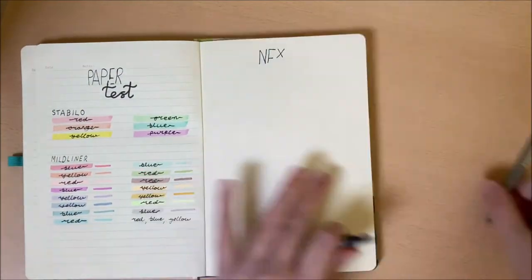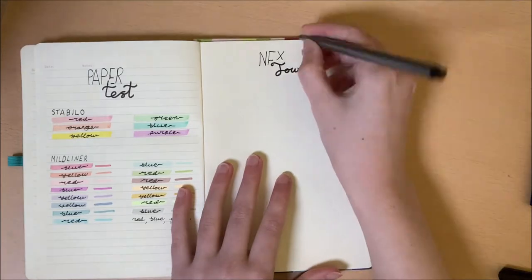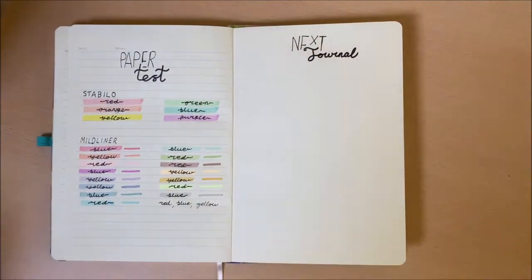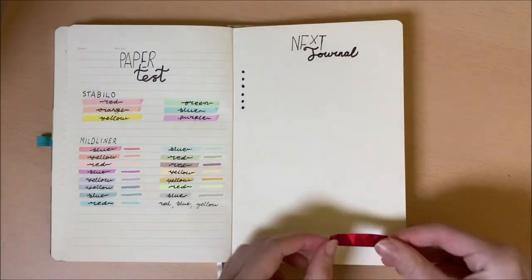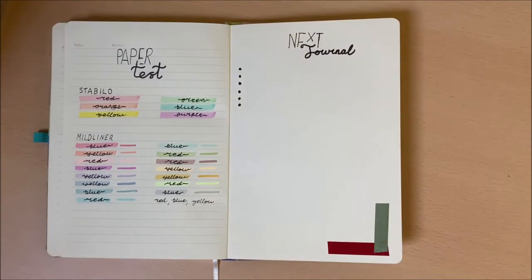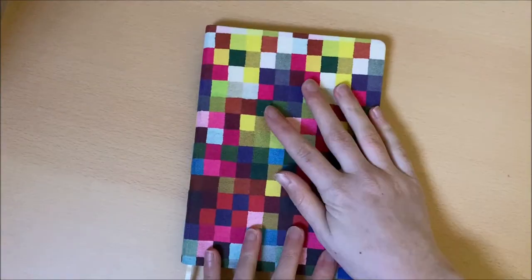And finally the last thing I always include at the back of a journal is a place for ideas for my next journal. This is really helpful when it comes to figuring out which spreads work for you and which don't and it's handy to keep all of your ideas in the one place.